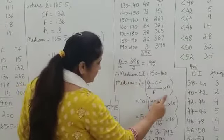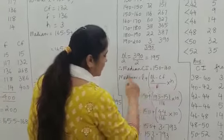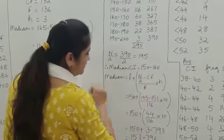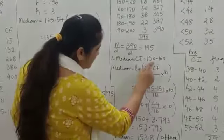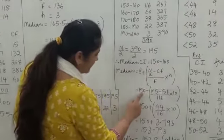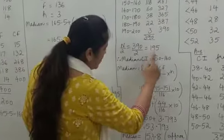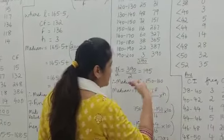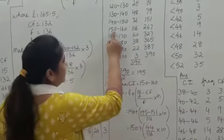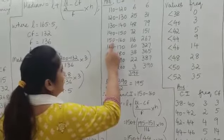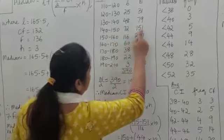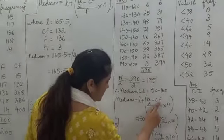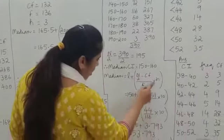We know the formula to find the value of the median. Write out the formula and obtain the values. L is the lower limit of the median class, which is 150. The value of n by 2 is 195. CF is the cumulative frequency of the class preceding the median class — the class before 150–160 has a cumulative frequency of 151, so CF equals 151.